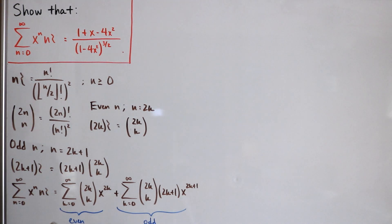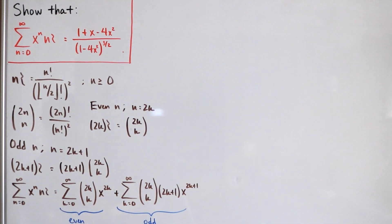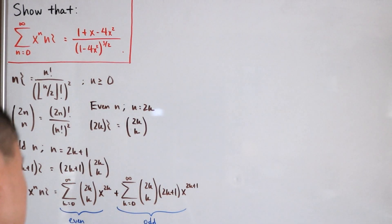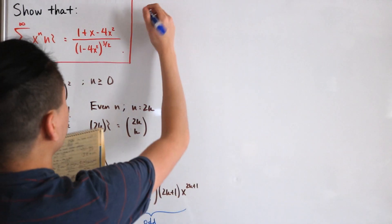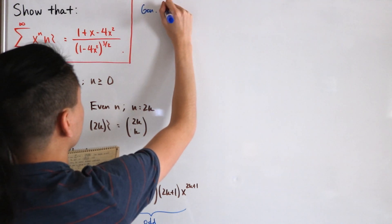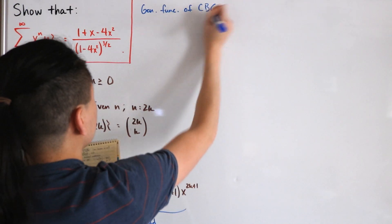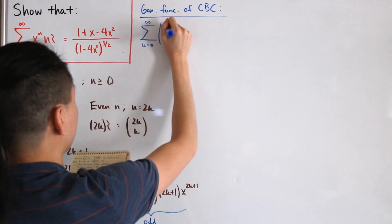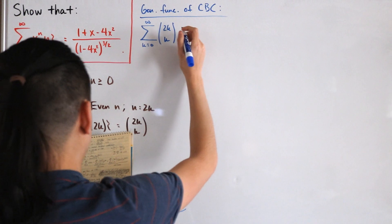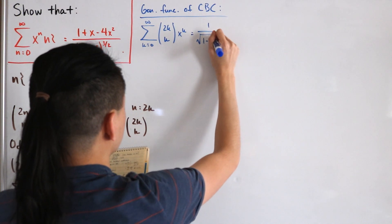To proceed, we'll use the generating function of the central binomial coefficient, which we'll prove first. The generating function of the CBC is: Σ_{k=0}^∞ C(2k, k) · x^k = 1 / √(1 - 4x).